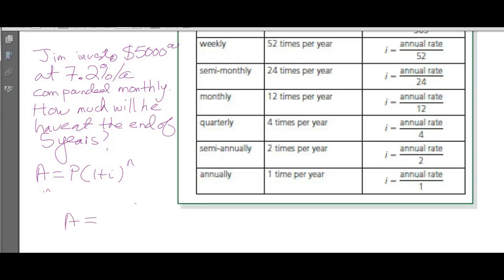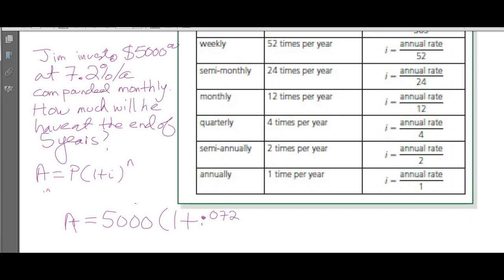A = $5,000 × (1 + 0.072 ÷ 12)^N. It's monthly, so we need to divide the interest rate by 12. When the compounding period is anything but annual, you need to adjust the interest rate by dividing it by how many times per year you're getting paid.